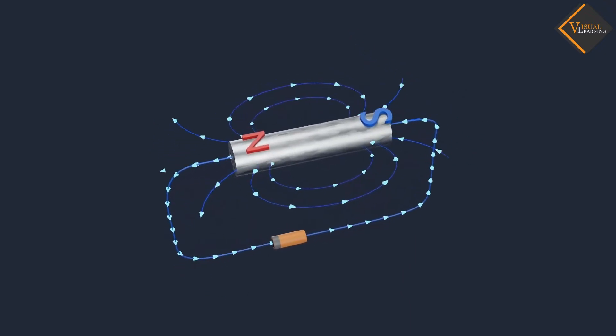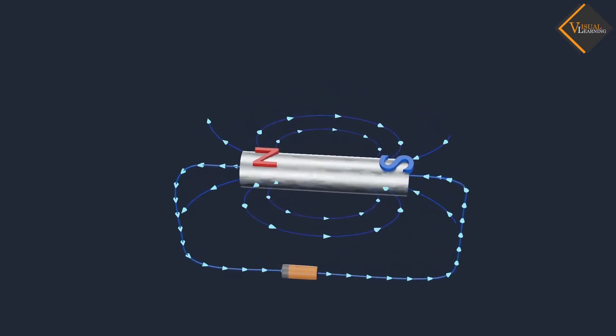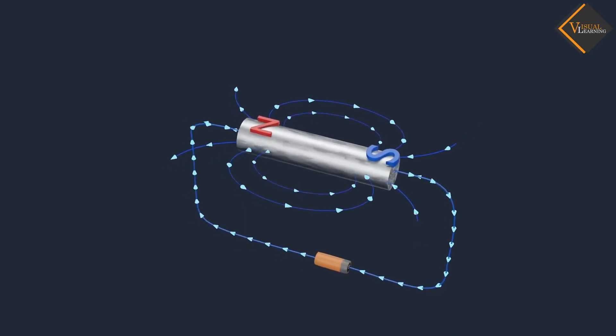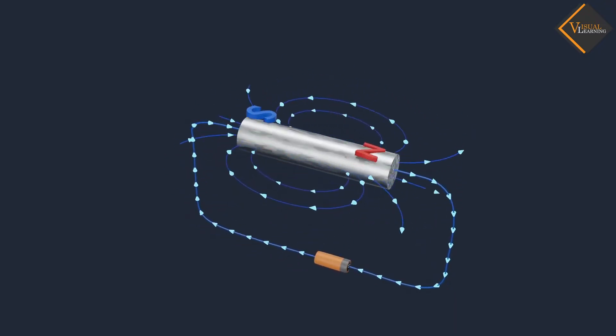Also, polarity of the conductor depends upon direction of the current. When direction of the current changes, the polarity of the conductor also changes.